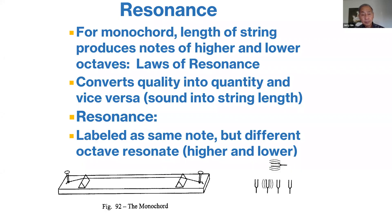Let's define resonance. We all know that if you have a tuning fork and strike it, all tuning forks that are an octave below or above it will vibrate. The same can be said for a stringed instrument — in this case there's a picture of a monochord. There are two fixed points, and the length of the string between those two fixed points determines what note it is. If you pluck that string it'll vibrate, and strings which are twice that length, four times that length, half that length, a quarter of that length — shorter or longer — will also vibrate. That is resonance, and that is the basis for detecting subtle energies and vibrational energies.